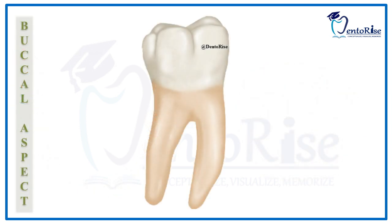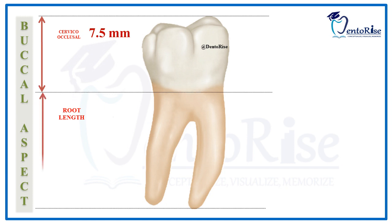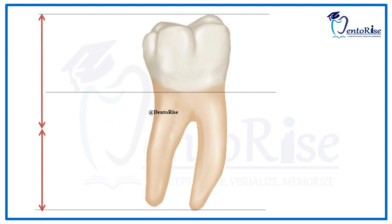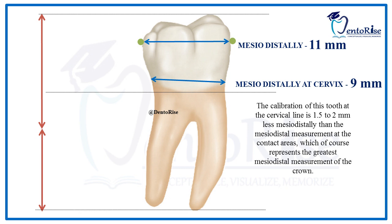The first heading under the buccal aspect would be the dimensions. The cervico-occlusal length of the crown, as measured from the tip of the highest cusp to the cervical line, is 7.5 mm. The root length as measured from the cervical line till the apex of the root is 14 mm. The meso-distal dimensions of the crown is 11 mm and the meso-distal dimensions at the cervix is 9 mm, which is 1.5 to 2 mm less than that at the greatest curvature.